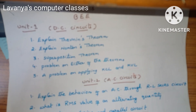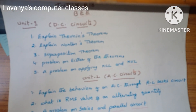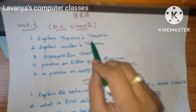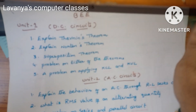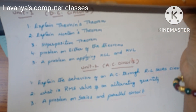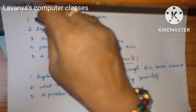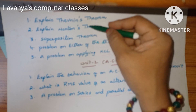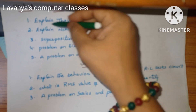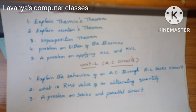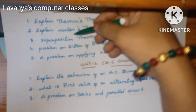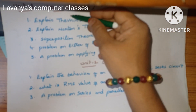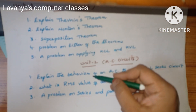Unit 1 is DC circuits. The important questions are: explain Thevenin's theorem, explain Norton's theorem, superposition theorem, and problems on either of the theorems. First we read all the theorems, then whatever problems are faced, those problems and a problem on applying KCL and KVL. So these are the unit 1 important questions.